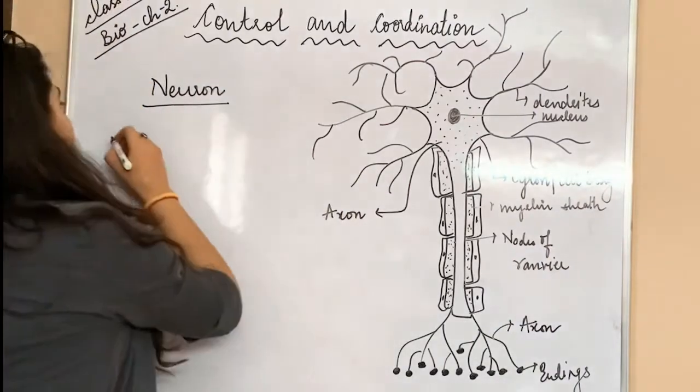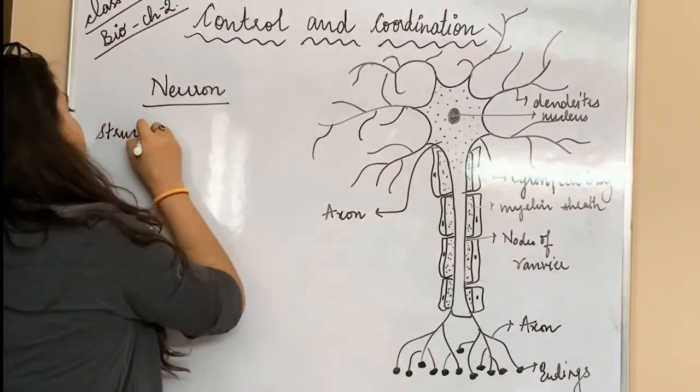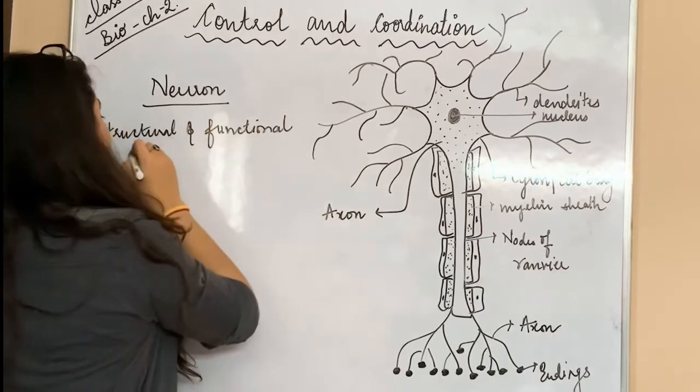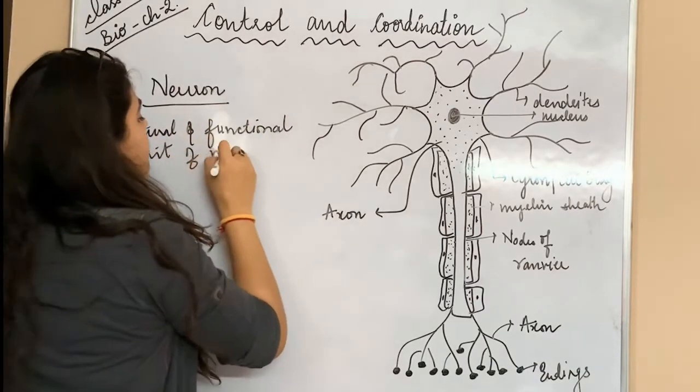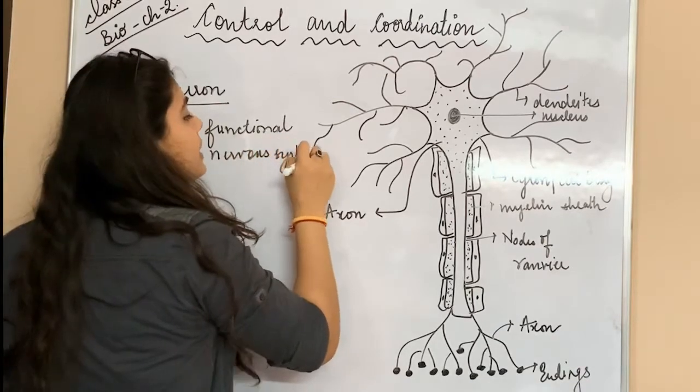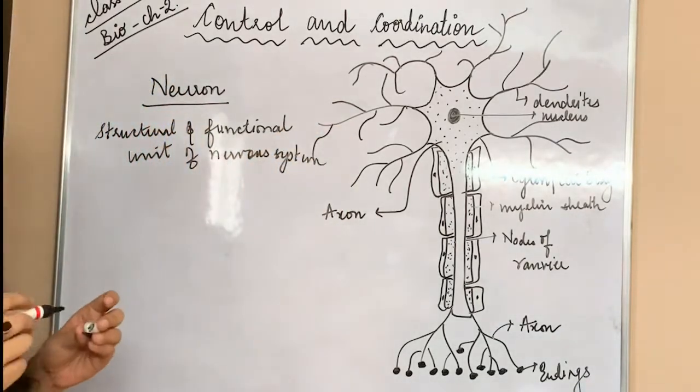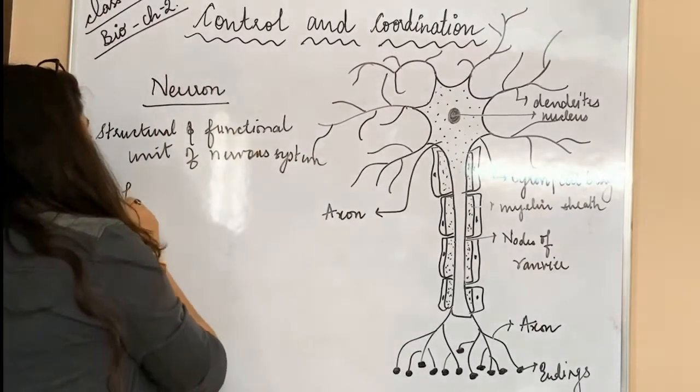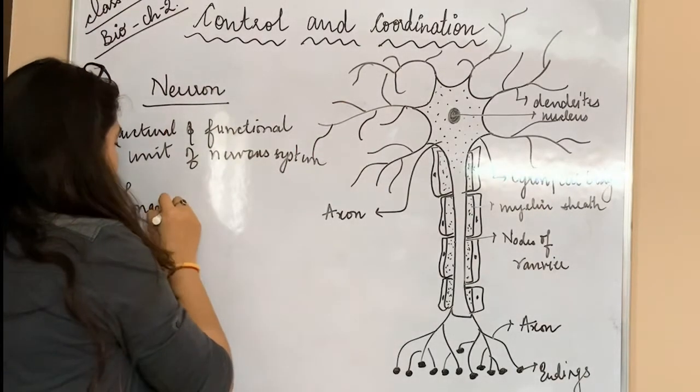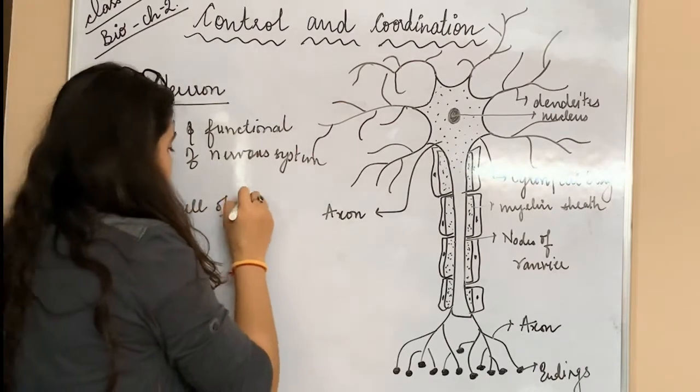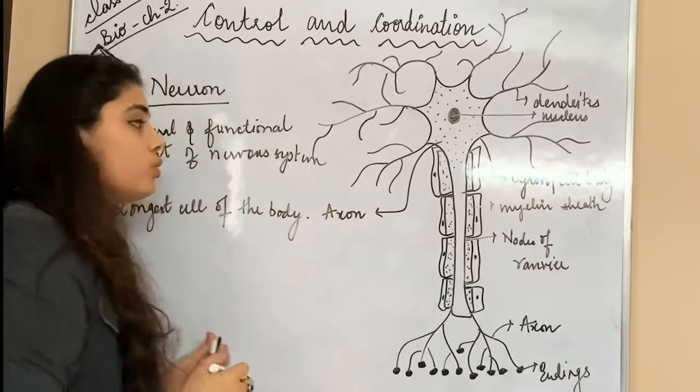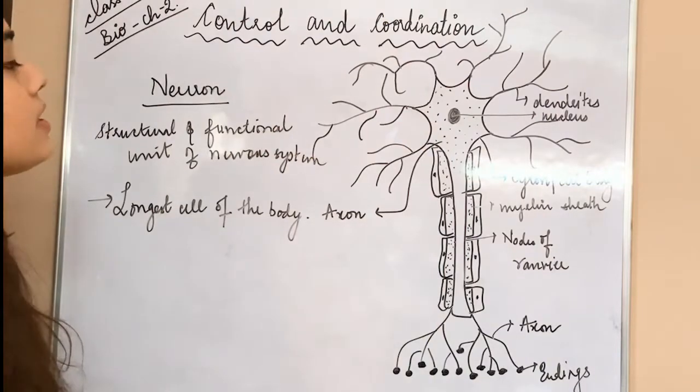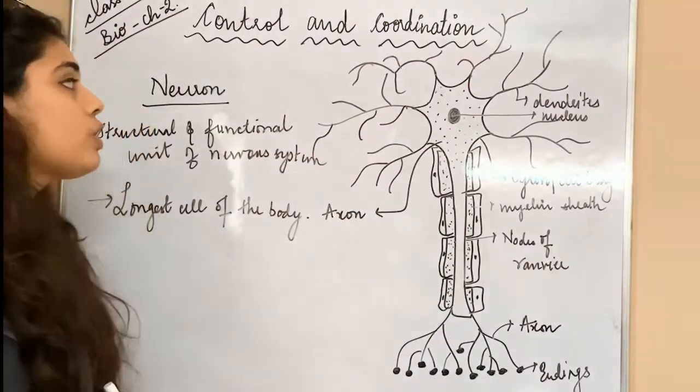So this is the structure and the functional unit of the nervous system. That means your brain, spinal cord, and nerves, all of them are functioning due to this. This is the longest cell of your body. This is the entire diagram which I have drawn for you. This is one of the single cells which is important. So let's study about neurons.